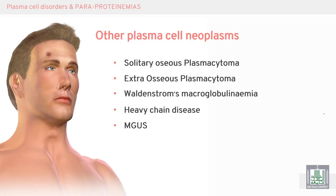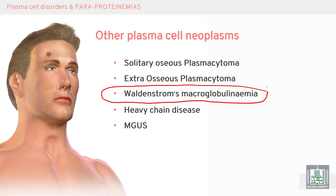Plasma cell neoplasms include several important conditions: Waldenström's Macroglobulinemia, solitary osseous plasmacytoma, extraosseous plasmacytoma, heavy chain disease, and monoclonal gammopathies of undetermined significance.